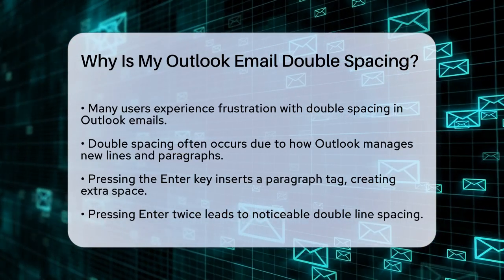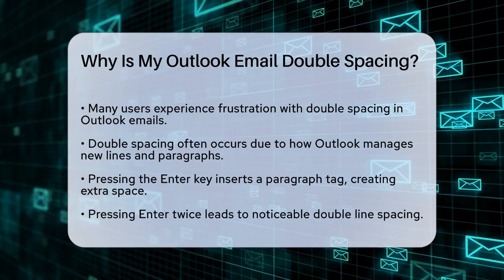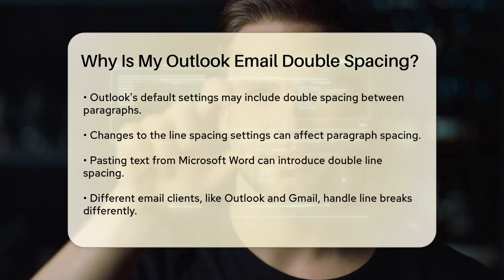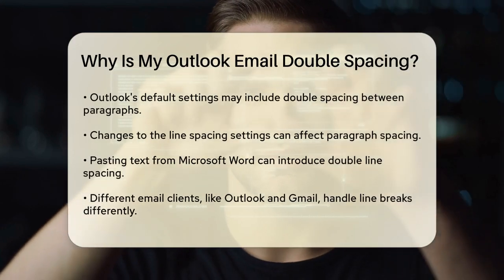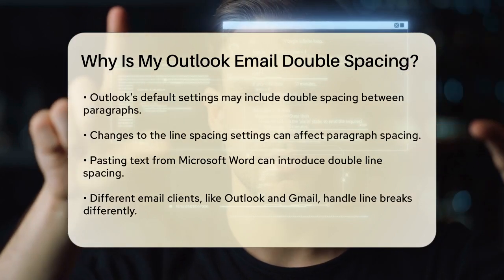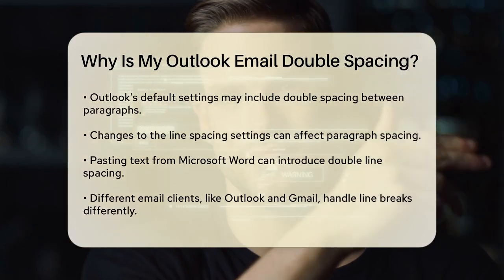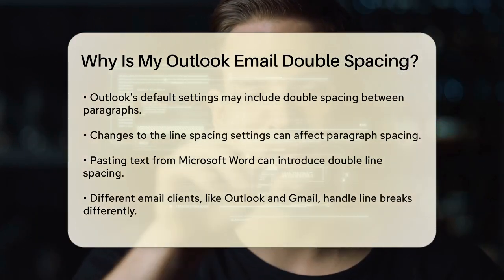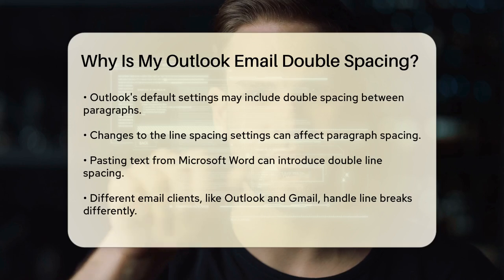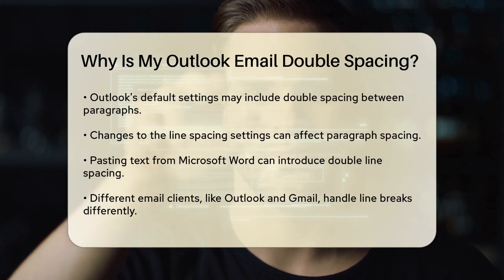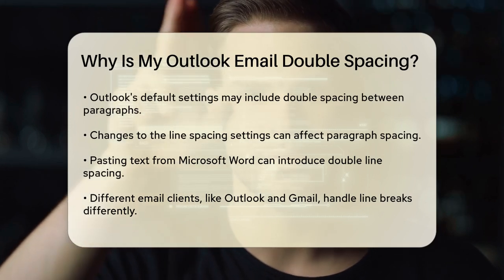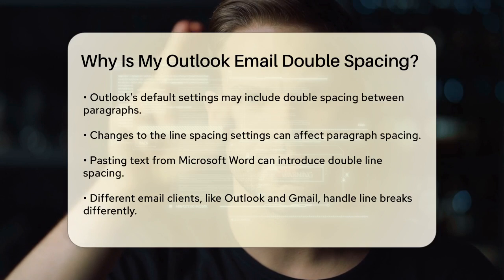Another common reason is the settings within Outlook itself. By default, Outlook uses double spacing between paragraphs, but if someone has changed these settings, it can affect the spacing within paragraphs as well. For instance, if the line spacing is set to double instead of single, you'll see double spacing between lines.